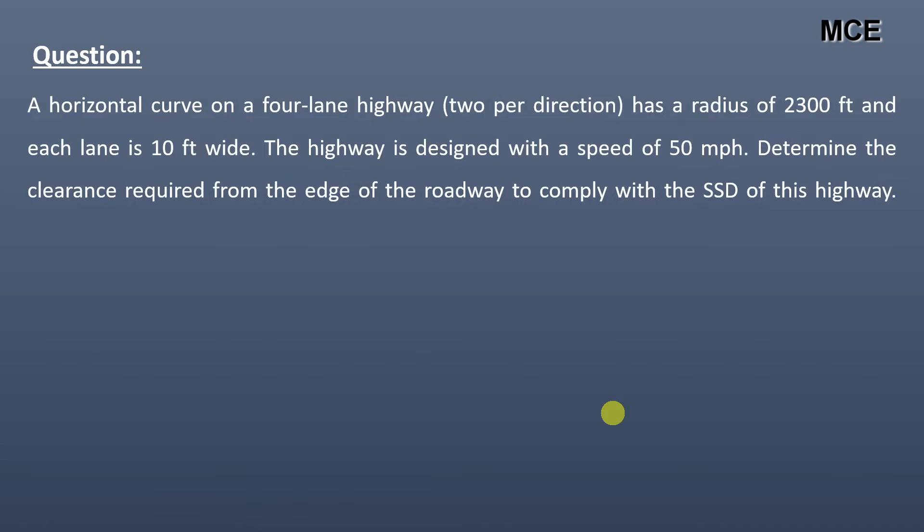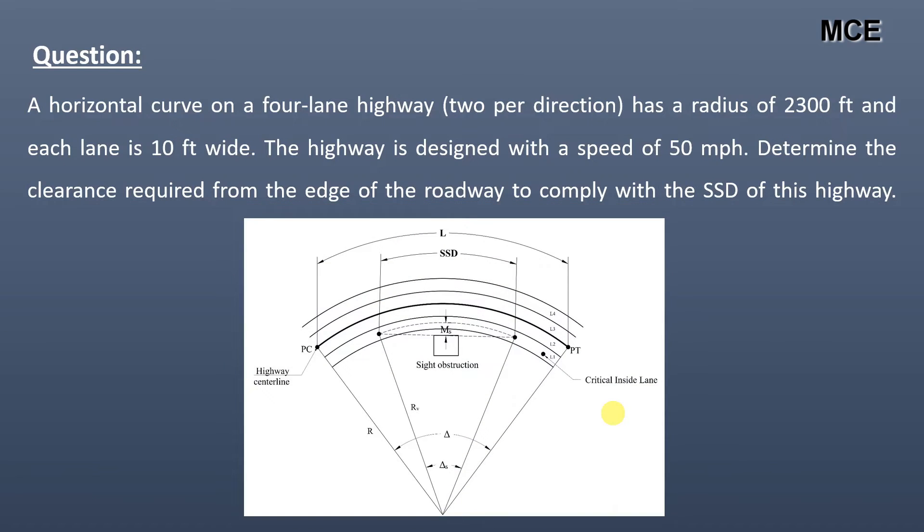The question states that a horizontal curve on a four-lane highway, two per direction, has a radius of 2300 feet and each lane is 10 feet wide. The highway is designed with a speed of 50 miles per hour. Determine the clearance required from the edge of the roadway to comply with the SSD of this highway.